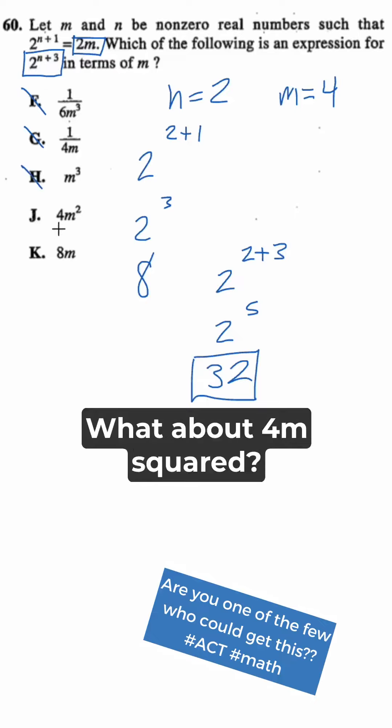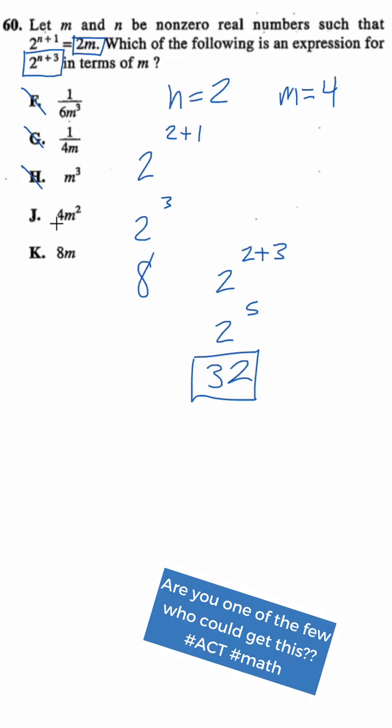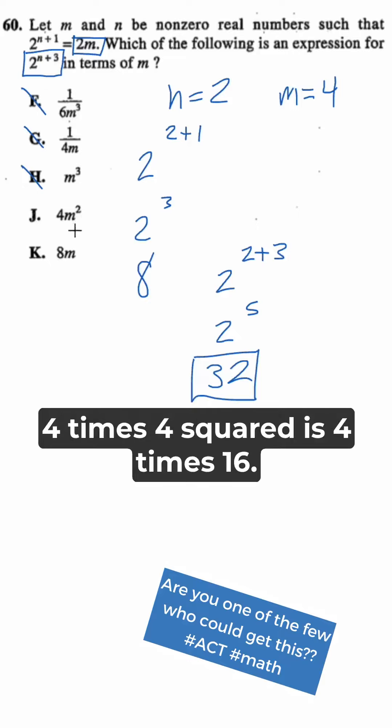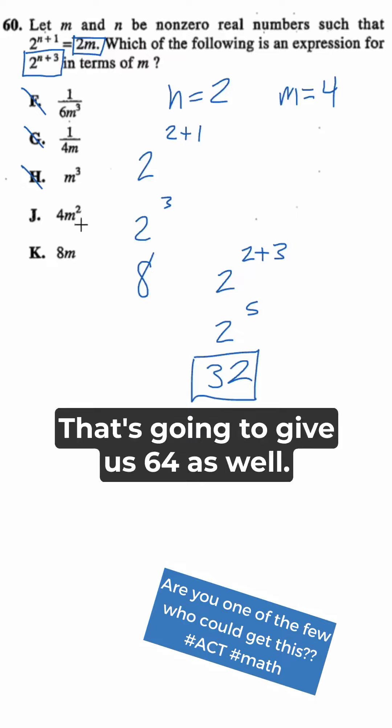Not 32. What about 4m squared? 4 times 4 squared is 4 times 16. That's going to give us 64 as well.